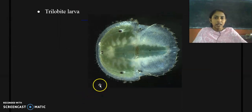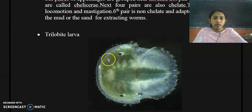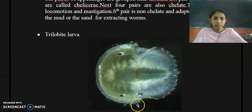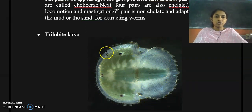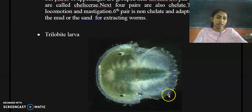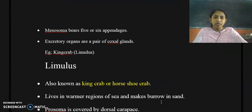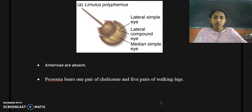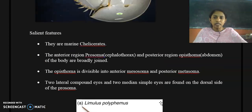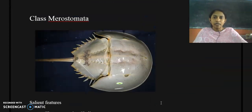The larva of the horseshoe crab, Limulus, is called the trilobite larva. These are the important characteristic features of Class Merostomata and Limulus. Thank you.